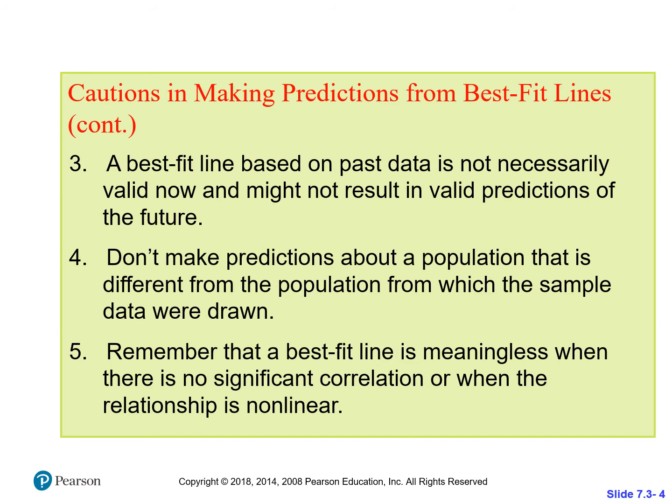A best fit line on past data is not necessarily valid through now and may not result in valid predictions of the future. Also, don't make predictions about a population that's different from the population from which the sample data were drawn. Right now I'm at home because of COVID-19, and I keep reading articles about when the peak is gonna be and when we're gonna be able to come out. But remember, all of these predictions and models are typically based on what we observed in China last year. That's a different culture, different laws, different people, different country. I'm not as confident about that model as I would be if we took a look at data from places similar to communities like mine where this has already passed.